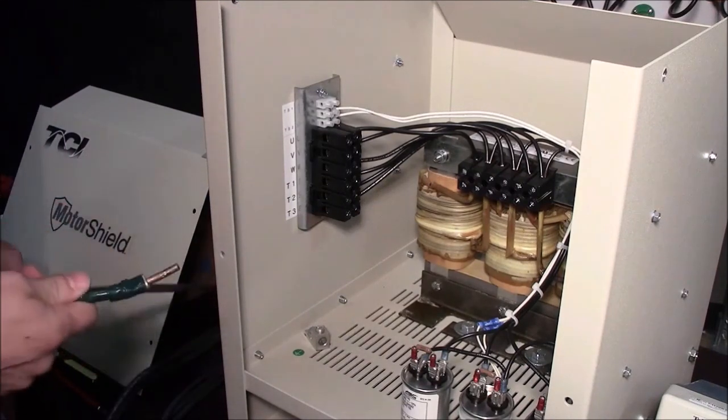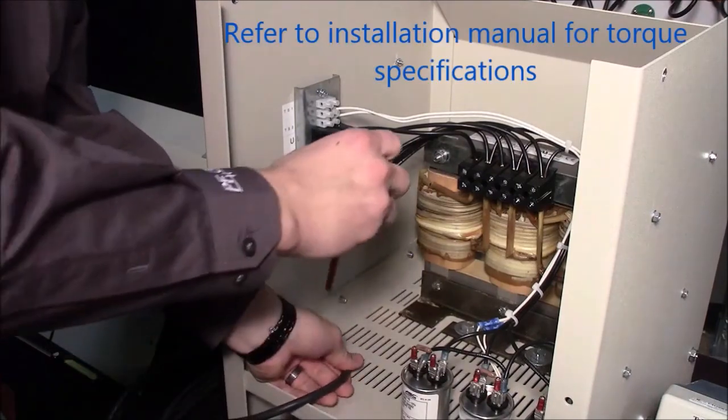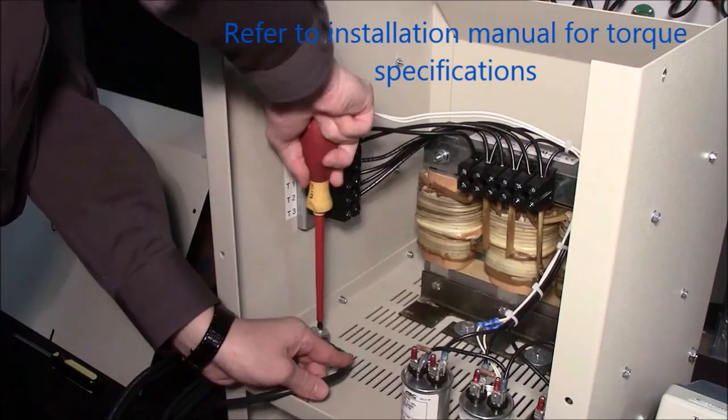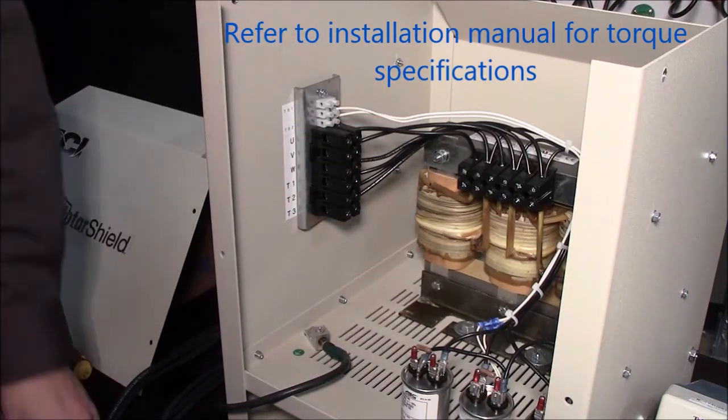During installation make sure that you always connect your ground wire which you can use a flathead screwdriver to do. All torque specifications can be found in the user manual of the motor shield or also online at transcoil.com.